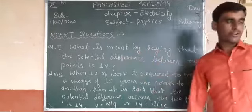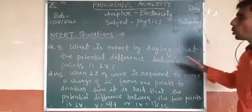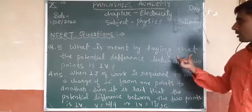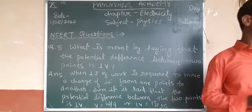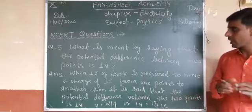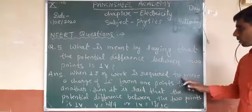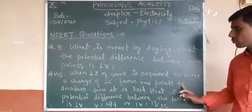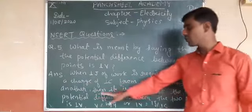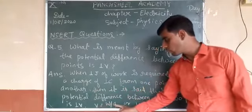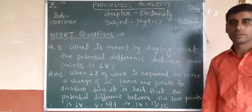Next question: what is meant by saying that the potential difference between two points is one volt? When one joule of work is required to move a charge of one coulomb from one point to another, it is said that the potential difference between the two points is one volt. The formula is V = W/Q, so one volt equals one joule per one coulomb.